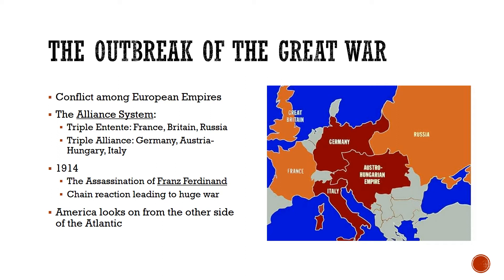On the other side, the other team in this lineup is called the Triple Alliance, and it consists of Germany, Austria-Hungary, and Italy. Europe is divided into two teams, and what this means is that if there is a conflict between any two countries, it could suck all of the other countries into the conflict. So if Italy picked a fight with France, that would pull all the other powers into the war.